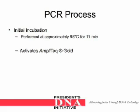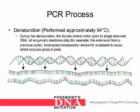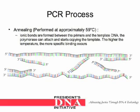The initial incubation of the PCR process is performed at approximately 95 degrees Celsius for 11 minutes to activate the AmpliTaq Gold DNA polymerase. Denaturation is performed at approximately 94 degrees Celsius. During denaturation, the double strand melts open to single-stranded DNA, and all enzymatic reactions stop. Incomplete denaturation allows for snapback to occur, which reduces product yield. Annealing is performed at approximately 59 degrees Celsius. Ionic bonds are formed between the primers and the template DNA. The polymerase can attach and starts copying the template. The higher the temperature, the more specific binding occurs.